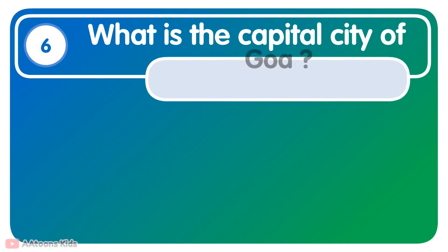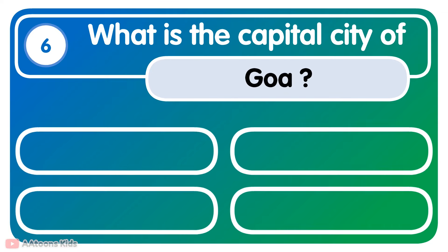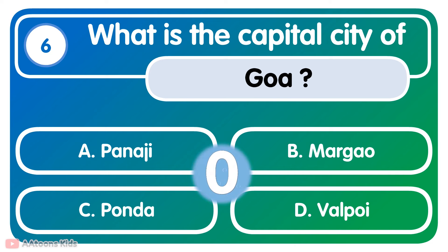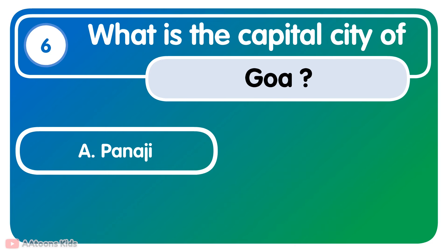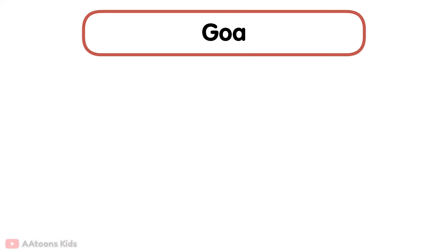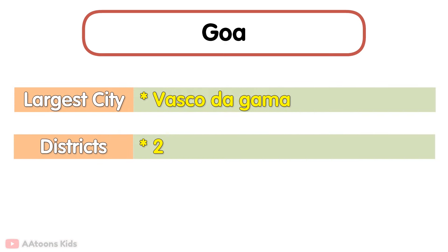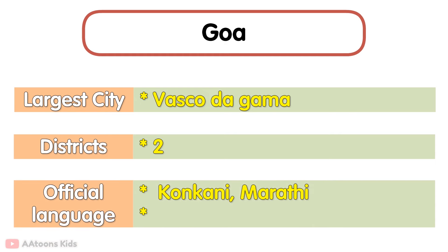What is the capital city of Goa? Panaji is the capital city of Goa. The largest city in Goa is Vasco da Gama. It has only two districts. Its official languages are Konkani and Marathi. Goa is famous for its sea beaches.